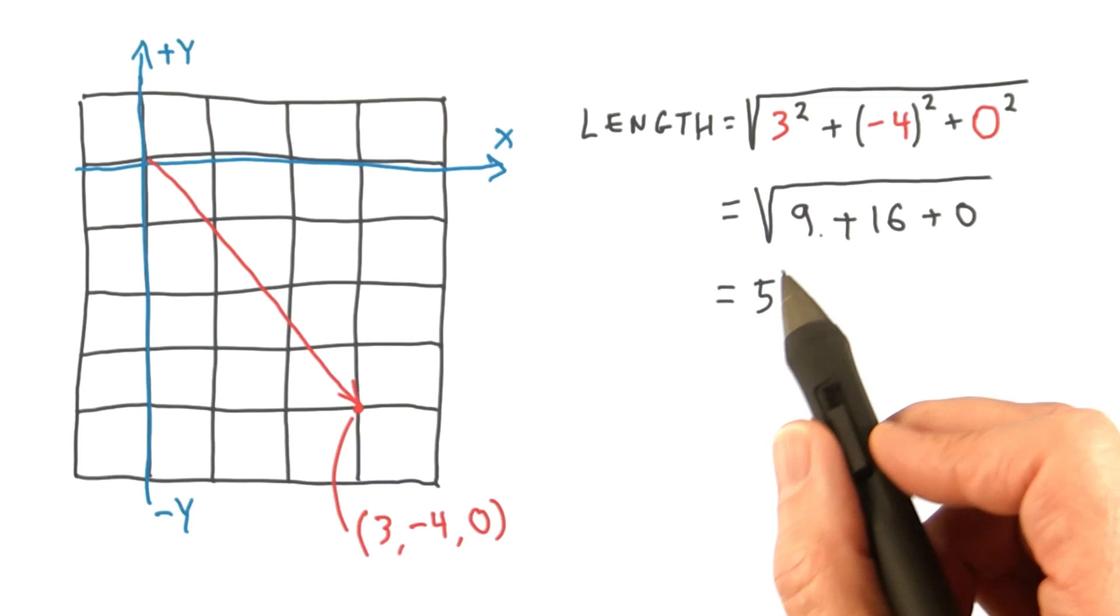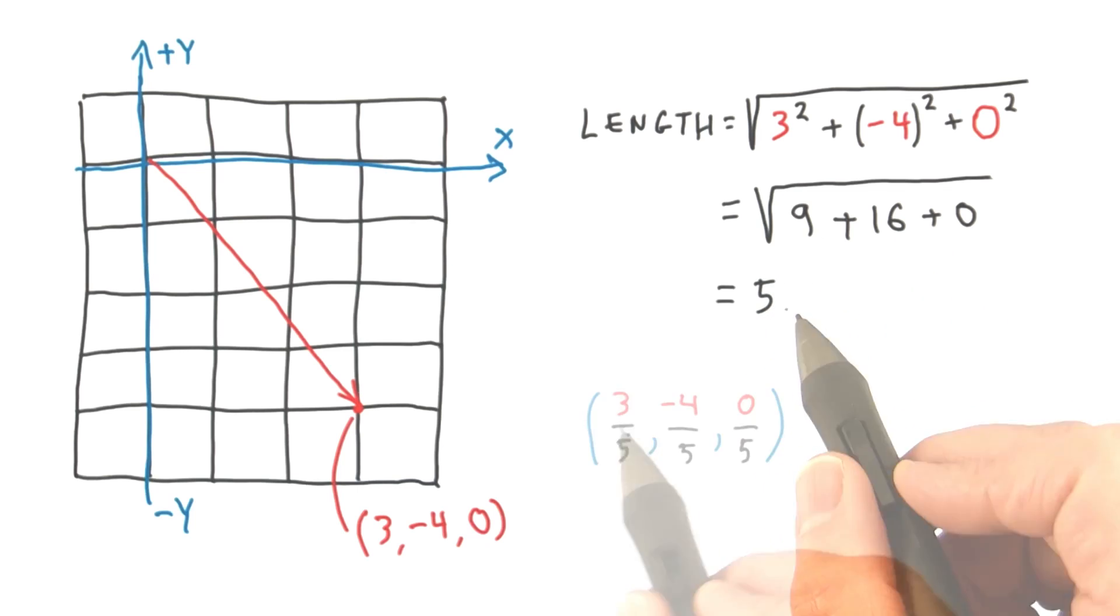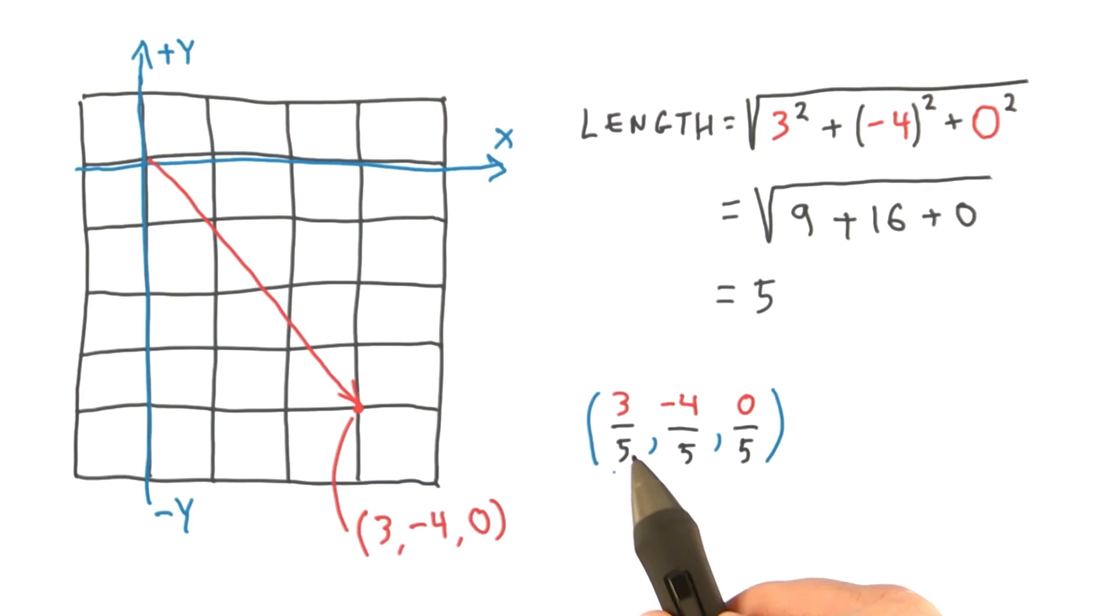Take the square root of 25, and you get the length of the vector, 5. It's lucky that turned out so easily. By dividing the vector by its length, you get a normalized vector. So 3, negative 4, 0, normalized is 0.6, negative 0.8, 0.